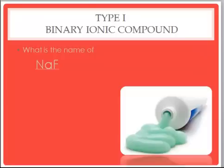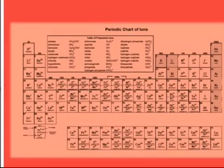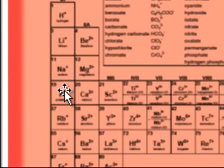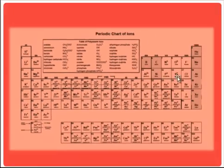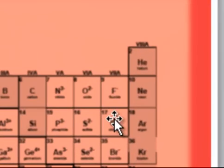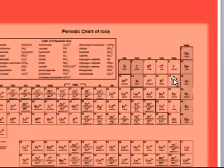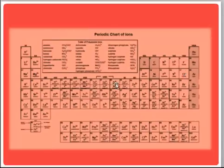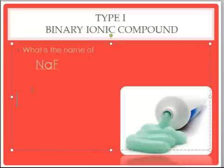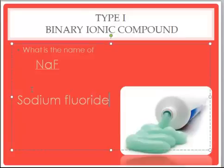Next, I want to name this compound found in toothpaste: NaF. To name it, we need to know the names of each ion that make it up. Referring to this periodic table, Na is number 11 — on the left-hand side of the periodic table it's a metal — and F minus is called fluoride, it's a nonmetal on the right-hand side of the periodic table. So this compound becomes sodium fluoride, and it's put in toothpaste to harden our teeth.